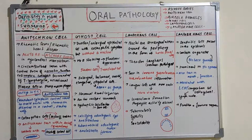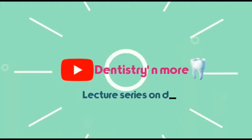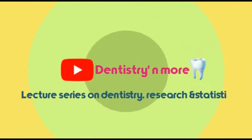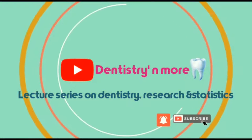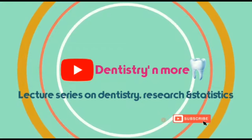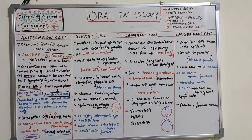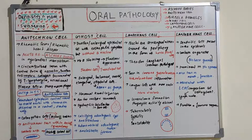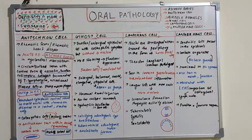The first one is the Anishkov cell. The Anishkov cell is a characteristic cell seen in rheumatic fever or rheumatic heart disease. In acute rheumatic fever, structures known as Ashoff's bodies are seen in the myocardial interstitial space.